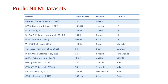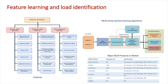In this process, we can replace inefficient or faulty appliances with new ones for effective energy management. These are the popular public NILM datasets that have been used in the NILM research community. Feature learning and load identification — these are the feature extraction methods used widely in NILM system development. The extracted features are fed to the machine learning classifier for training the model.